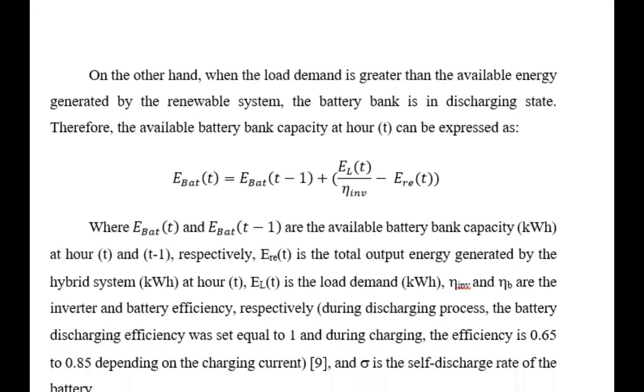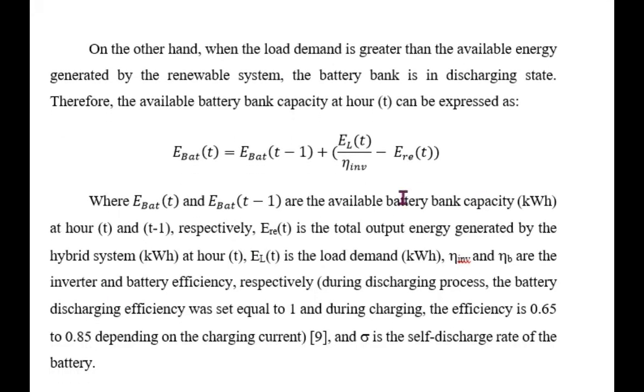Similarly, for discharging of the energy, when there is an insufficient amount of energy to meet the load demand, the battery new energy at time t will be previous energy minus the deficient amount of power that has to be provided to the load. So E load divided by inverter efficiency minus E renewable energy that is provided by the renewable energy sources. So that will be the deficient amount of power. The load demand minus renewable, that is the deficient. That cannot be met by the renewable.